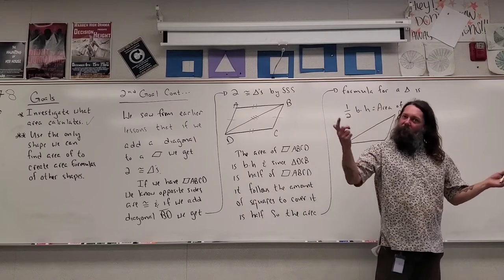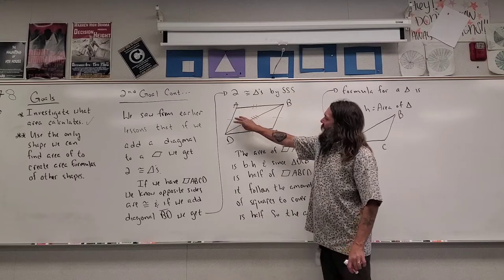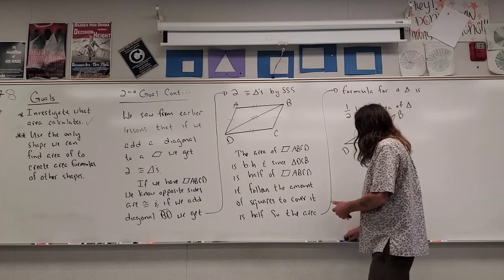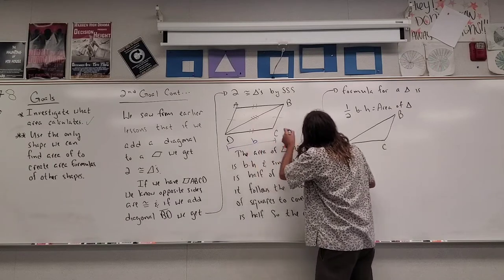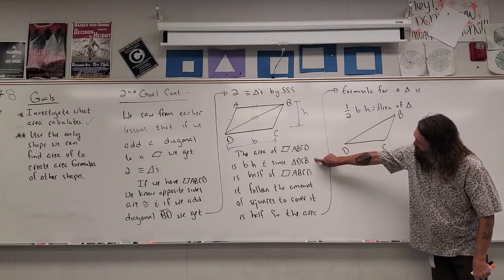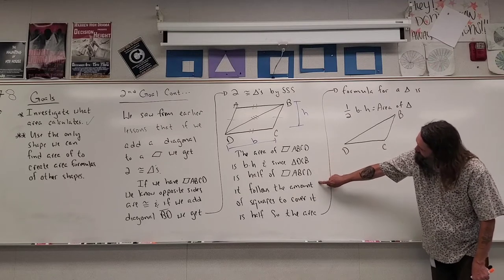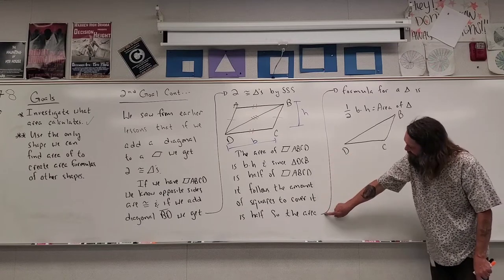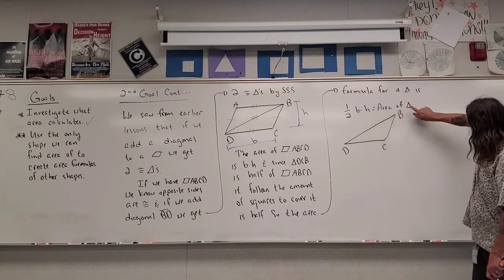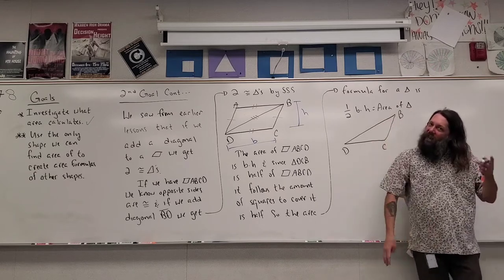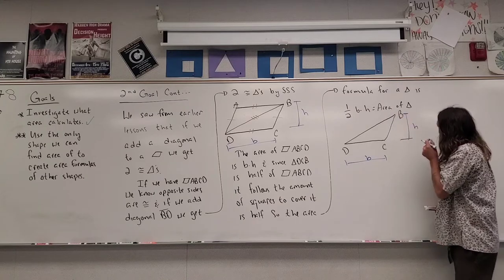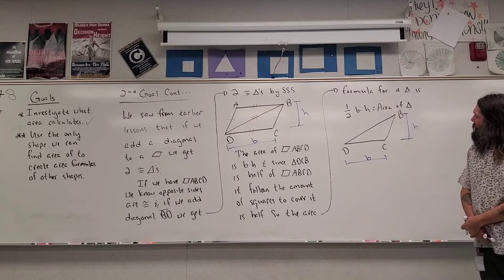Congruent triangles means they're the same, so the triangle in the lower half is the same as the triangle in the upper half. The area of parallelogram ABCD is base times height. Since triangle DCB is half of parallelogram ABCD, it follows that the number of squares to cover the triangle is half. So the area formula for a triangle is one-half times base times height. The triangle came from a parallelogram and is half the area of the parallelogram.